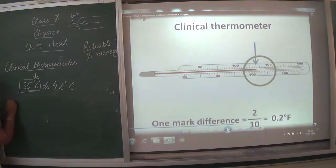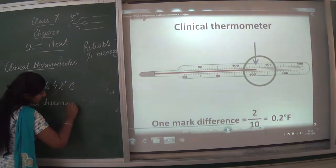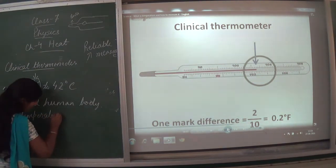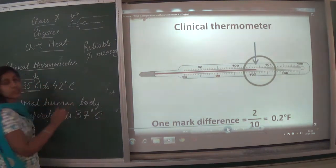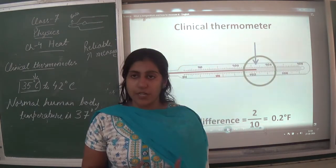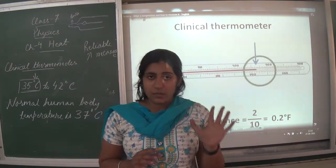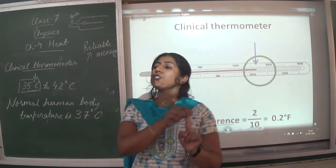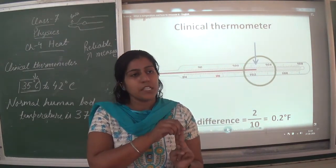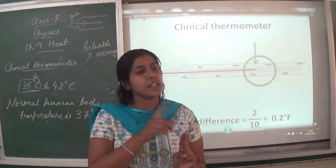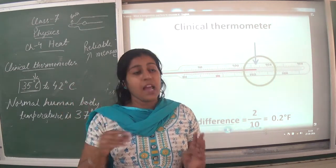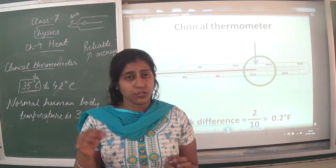The normal human body temperature is 37 degree Celsius. Remember, the clinical thermometer is used to measure human body temperature. The four precautions are: wash with antiseptic solution before and after use; bring mercury to 35°C before measuring; do not hold by the bulb; and carry the thermometer gently so it does not break.